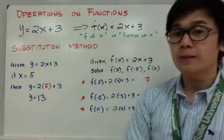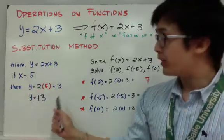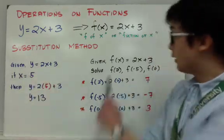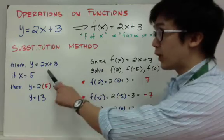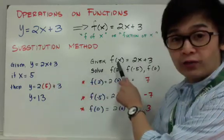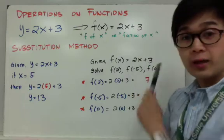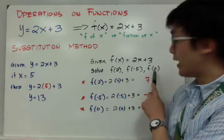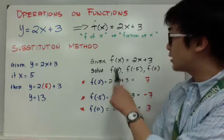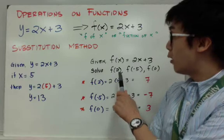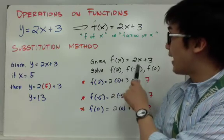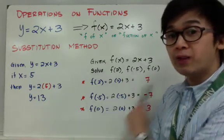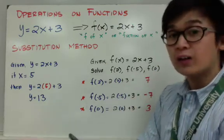Now in function operation, there's going to be a different way of writing this particular question. Same equation, y equals 2x plus 3, but now I'm using f of x is equal to 2x plus 3. This time we are asked to find f of 2, f of negative 5, and f of 0. Since x is replaced by a number, you are going to replace the x's with 2, negative 5, or 0 to evaluate your function.